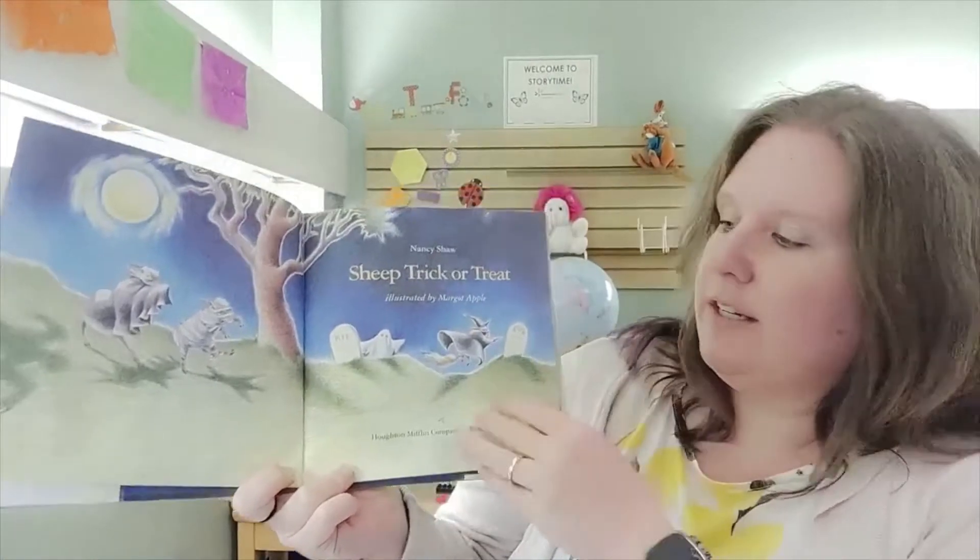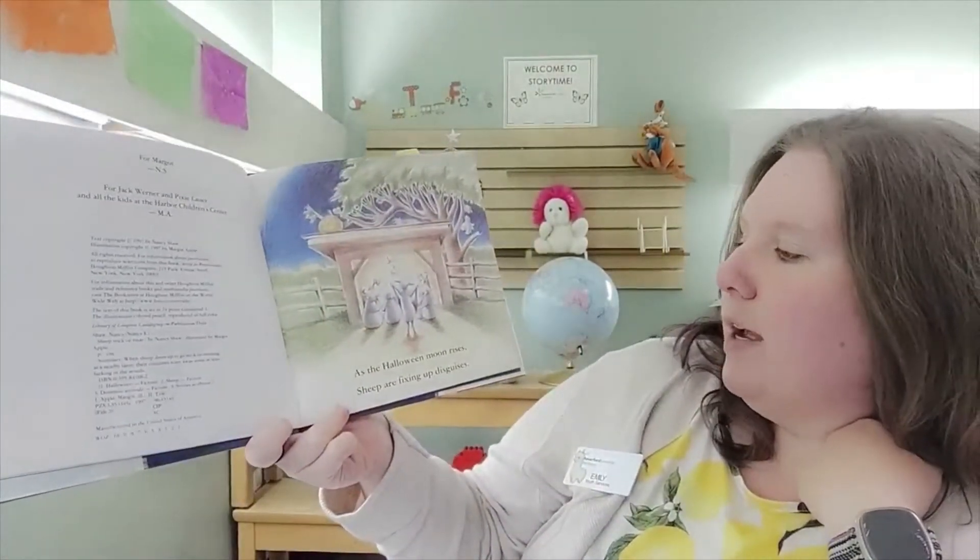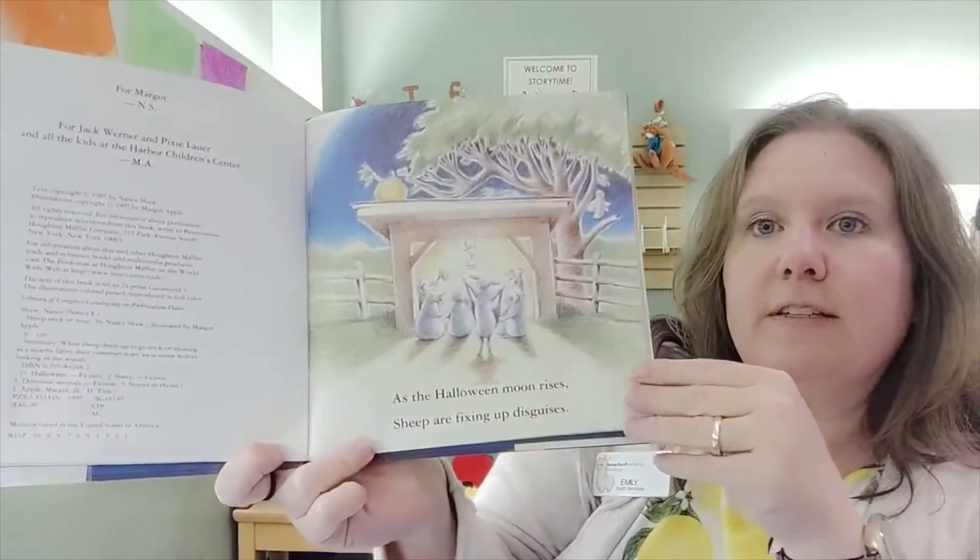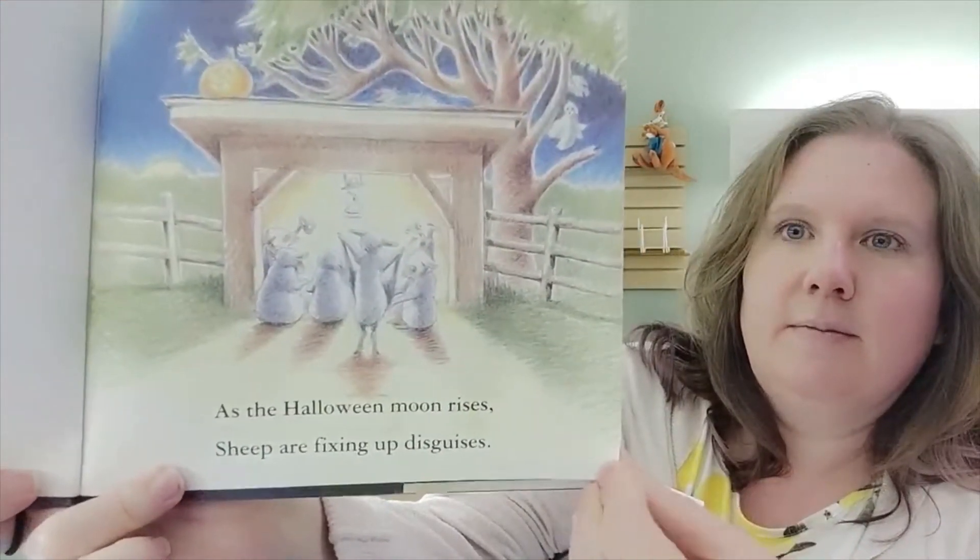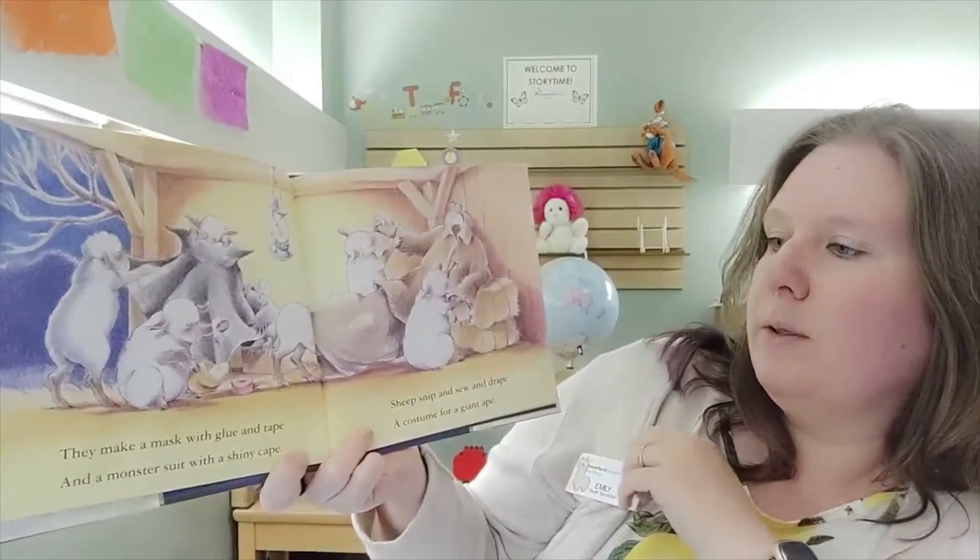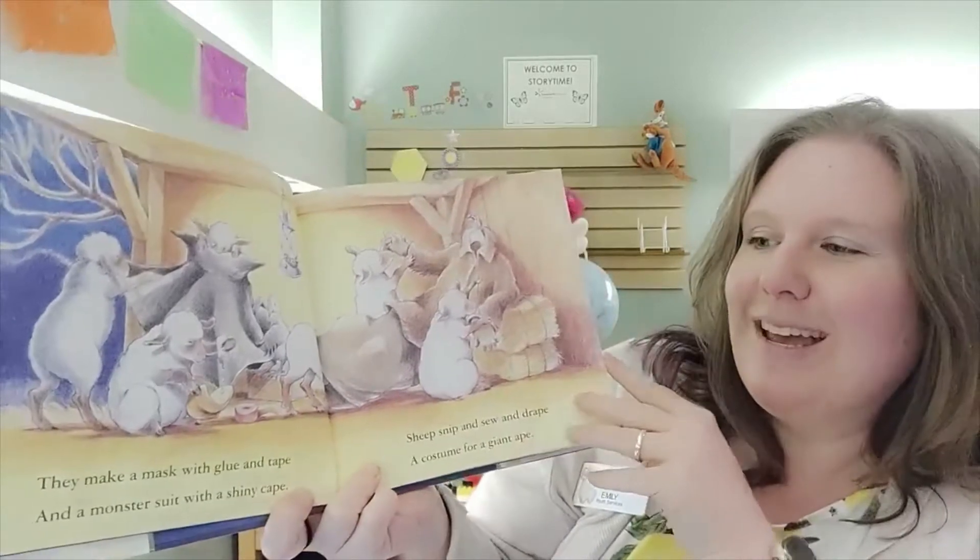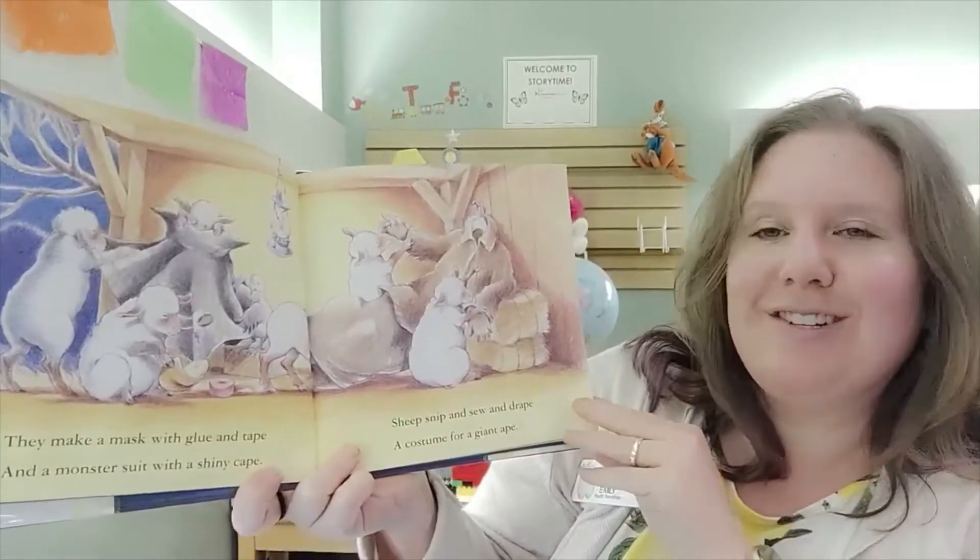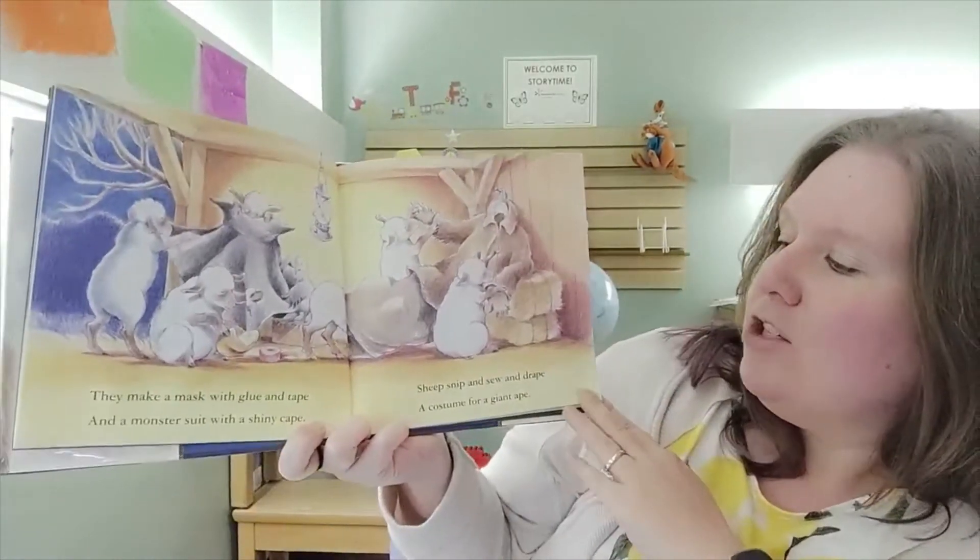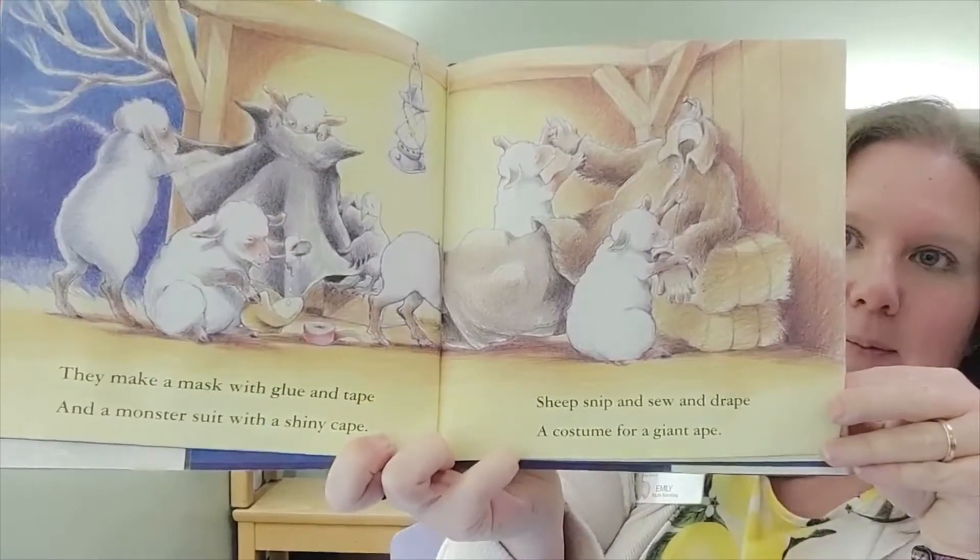Sheep Trick-or-Treat. As the Halloween moon rises, sheep are fixing up disguises. They make a mask with glue and tape and a monster suit with a shiny cape. Sheep snip and sew and drape a costume for a giant ape.